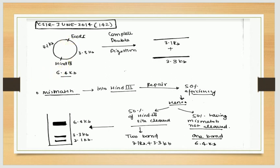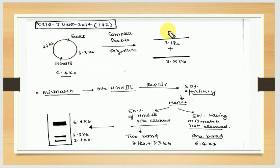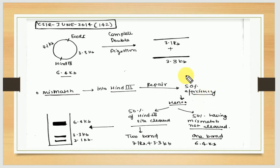Here is the 6.4 kb circular DNA with two restriction sites: ECO-R1 and HIN3. With complete digestion, there are 2 restriction fragments of 3.3 kb and 3.1 kb. A GT mismatch was introduced at the HIN3 site, and the repair efficiency is 50 percent. This means 50 percent of the HIN3 sites will be repaired and can be cleaved by the restriction enzyme.